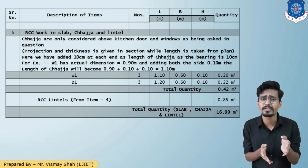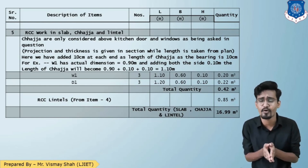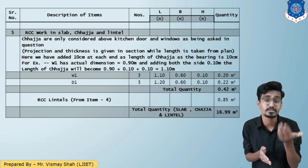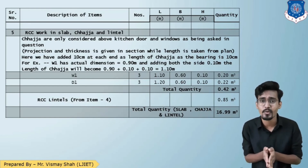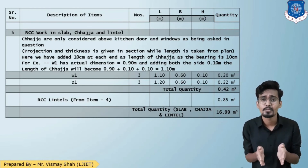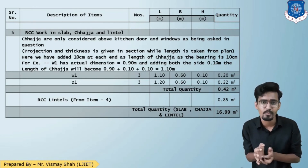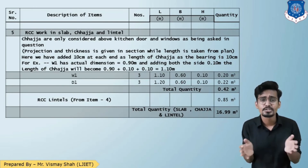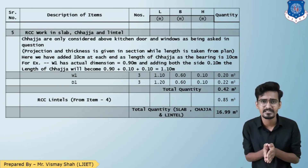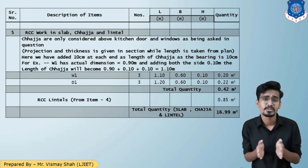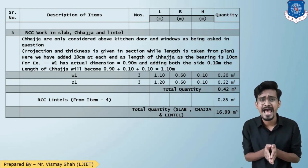For RCC lintel, it is the same quantity that was deducted from brickwork — 0.85 cubic meters — since the lintel is RCC, it is now added back as a positive quantity. Total RCC quantity: 15.72 + 0.40 + 0.85 = 16.99 cubic meters, approximately 17 cubic meters.